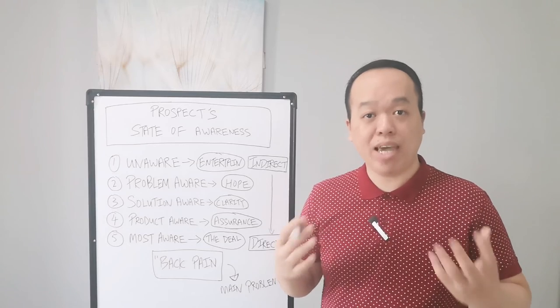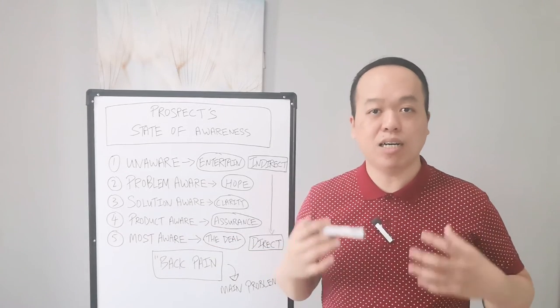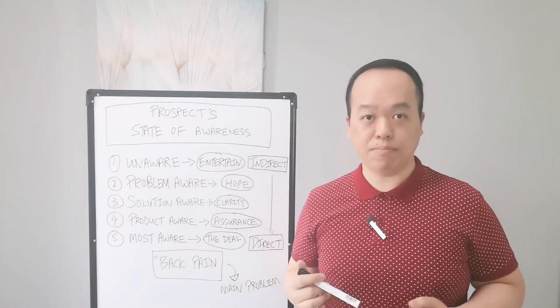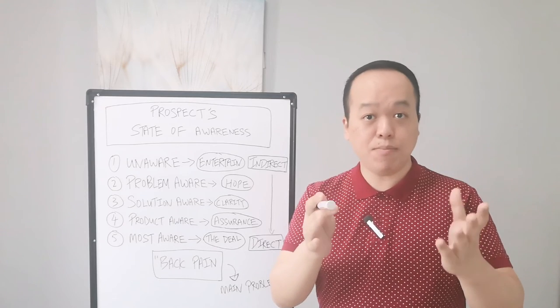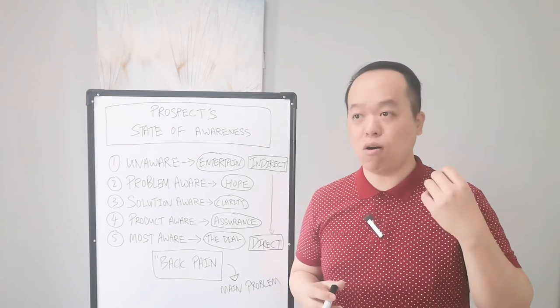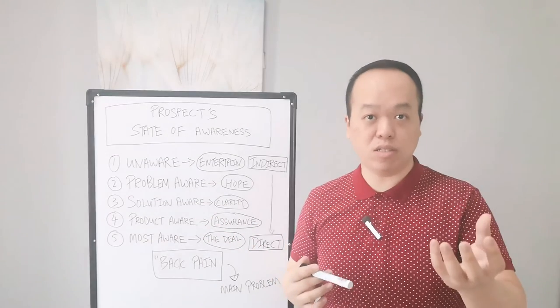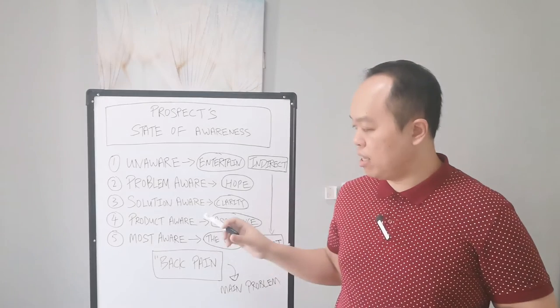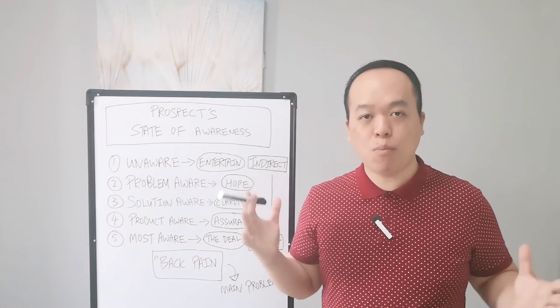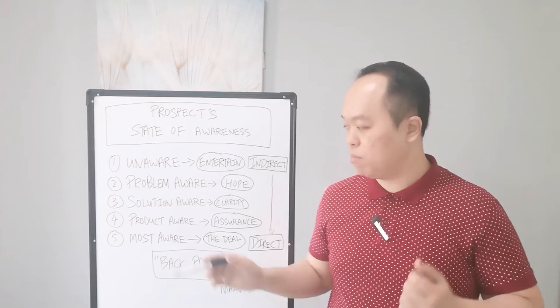Moving on to the fourth stage, which is product aware. In this stage, they already know that yoga is the best option for them and they know your company name exists. They already know what you're selling - your packages, your offer - but they just want to feel assured that they're making the right choice to buy the yoga packages from you. In this stage, they want more assurance, more claims, more proof to back it up. You need to put in a lot of success stories and case studies to attract them and move them to the most aware stage.